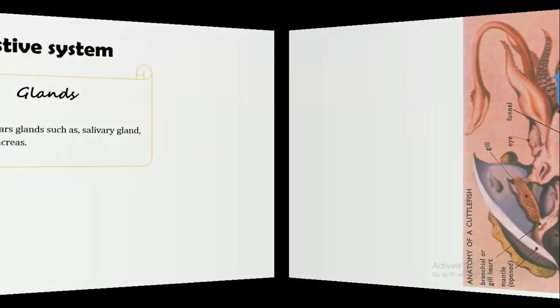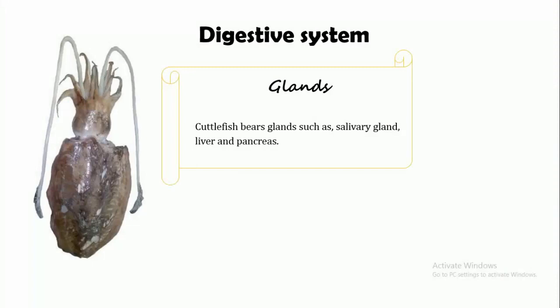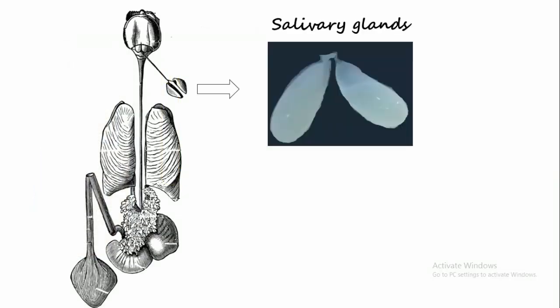After the alimentary canal, now we will focus on the glands. The digestive glands present in cuttlefish are the salivary gland, liver, and pancreas.